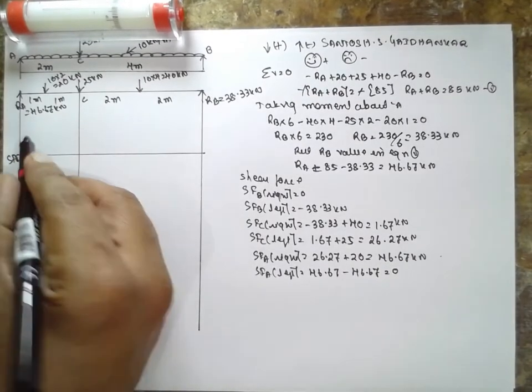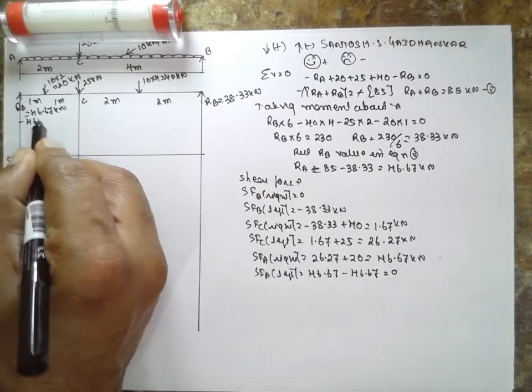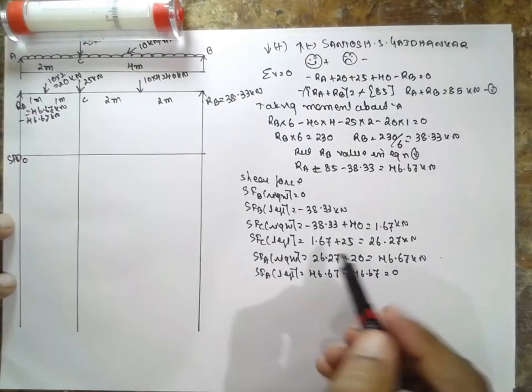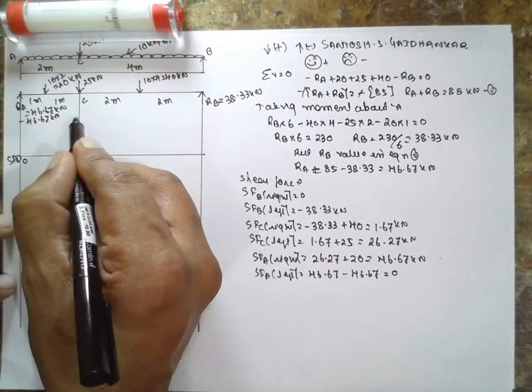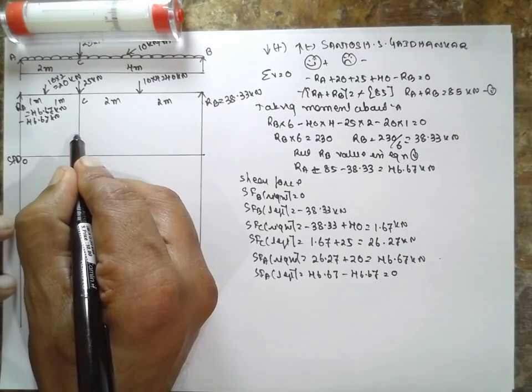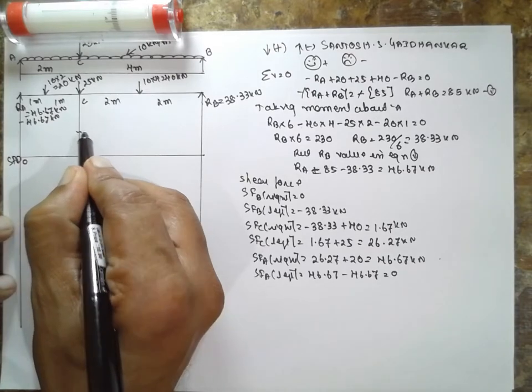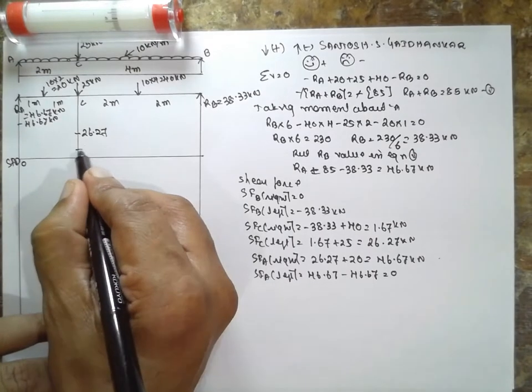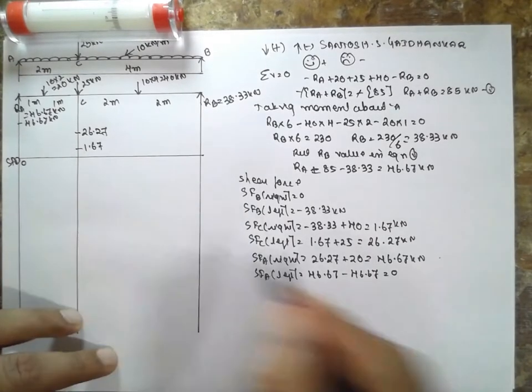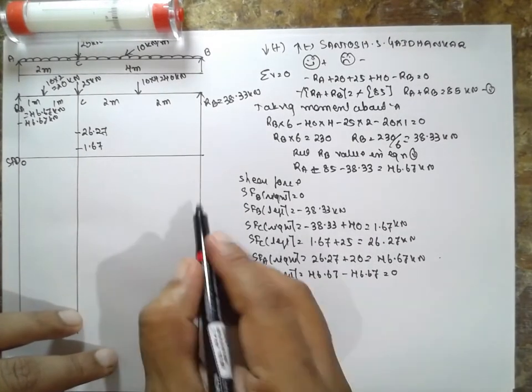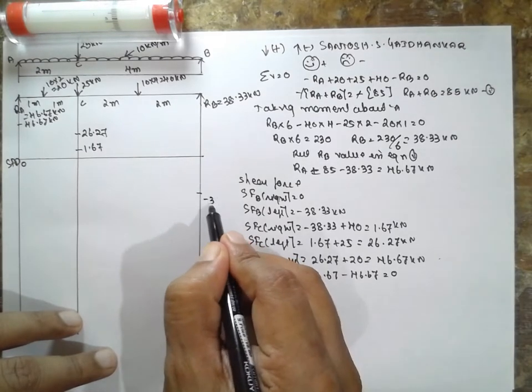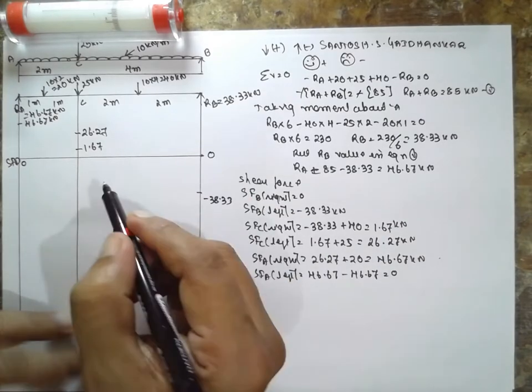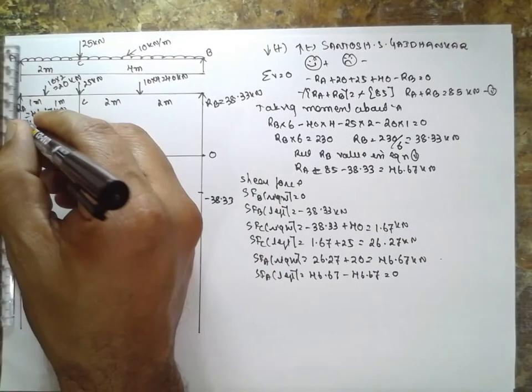Above is considered as positive, first is 0 at A, next is 46.67 kilonewton positive, again at C it is 26.27, again at C, it is 1.67, at B, minus 38.33, and 0. Draw and complete the pattern.